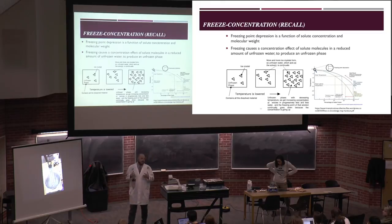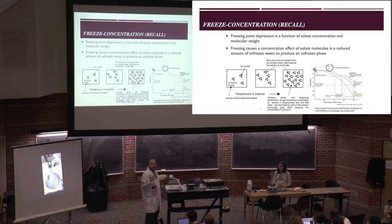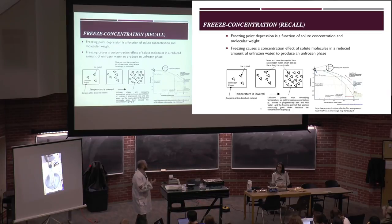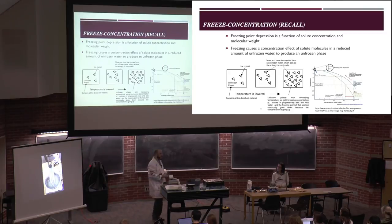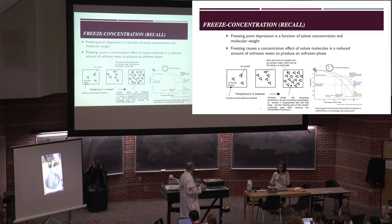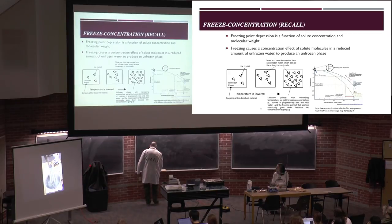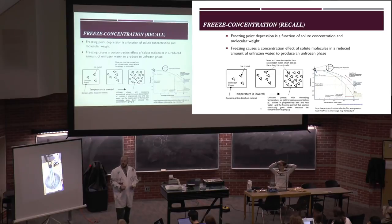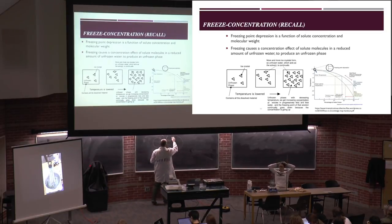Freezing point depression is very important when we talk about frozen desserts: ice cream, sherbets, frozen yogurts, and frozen foods. When we begin to freeze a sugar solution, ice crystals form. By freezing out the ice crystals, we increase the concentration of sugars in the unfrozen phase. If we get the sugar to a high enough concentration, we begin to modify the viscosity of that unfrozen phase.